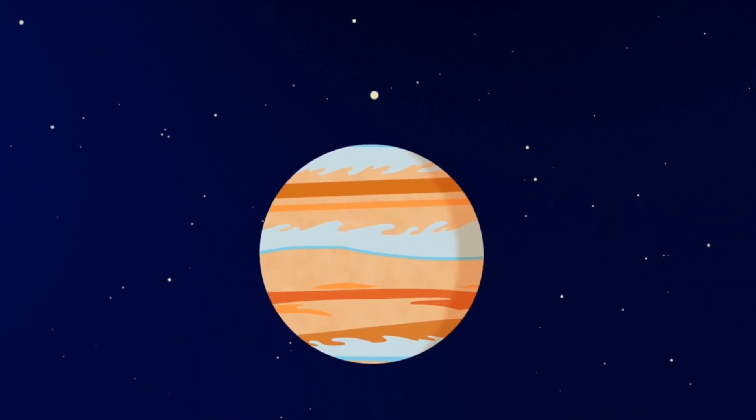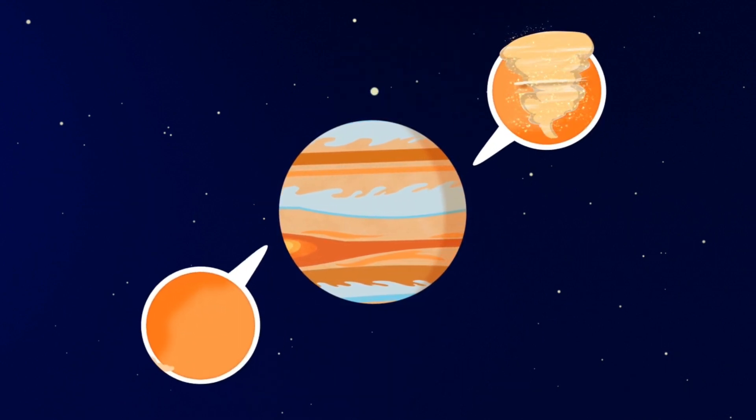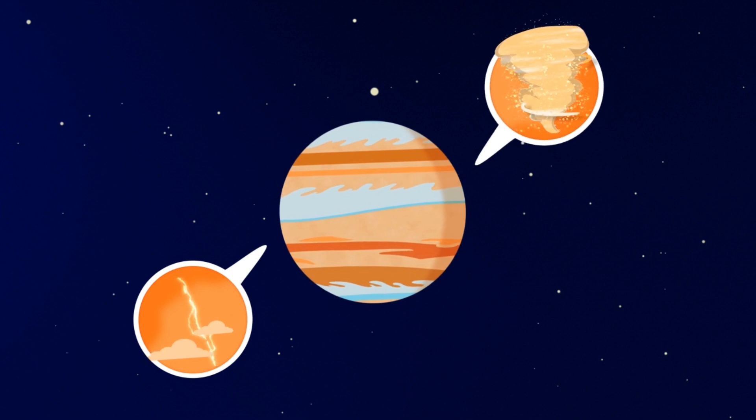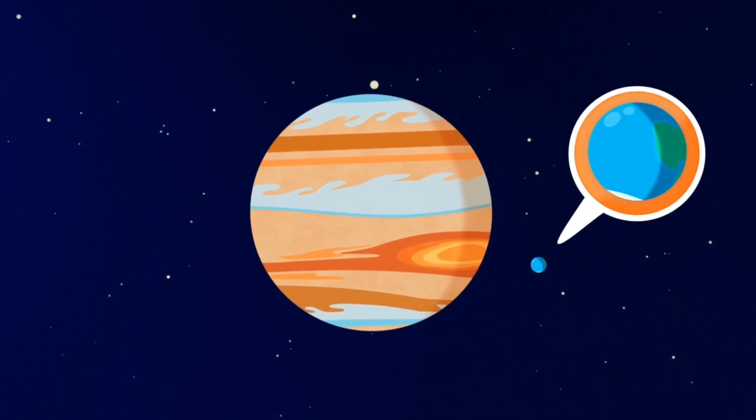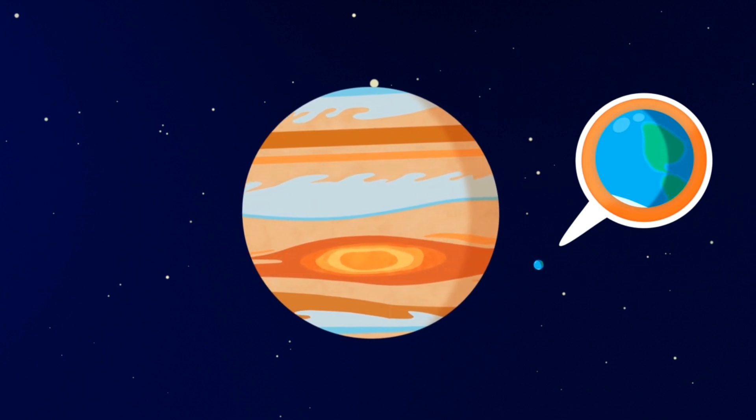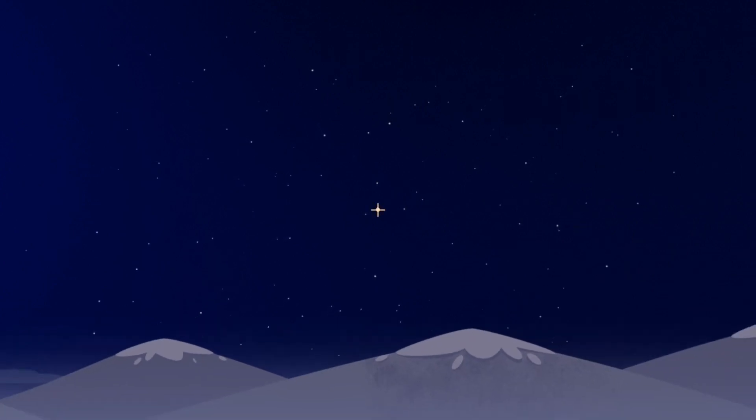Every revolution around its axis takes only 10 hours. This crazy speed causes different atmospheric phenomena, such as hurricanes and storms. One of these hurricanes is the Big Red Spot. It is bigger than the Earth and has lasted for hundreds of years. That's Jupiter, bright and blustering.